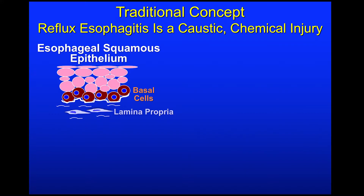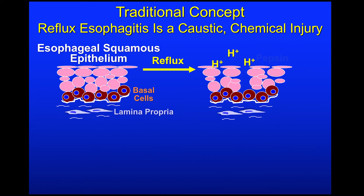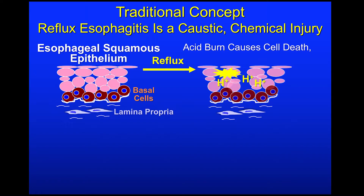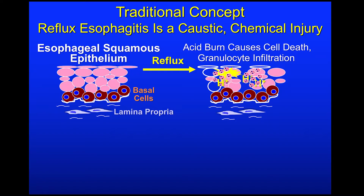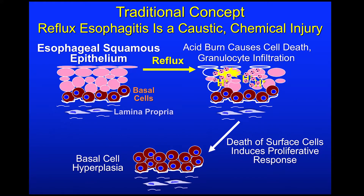The traditional concept that we were taught in medical school is that reflux esophagitis is a caustic chemical injury, an acid burn. We were told that when esophageal squamous epithelium is exposed to reflux gastric juice, acid and pepsin damage the surface cells and their junctional structures, making the epithelium leaky and allowing acid to enter and attack more epithelial cells. This acid burn is presumed to cause cell death, which triggers the infiltration of granulocytes like neutrophils and eosinophils. And the death of surface cells is assumed to induce a proliferative response, represented by basal cell hyperplasia, in which the basal cells proliferate in an attempt to replace the surface cells that were destroyed by acid.